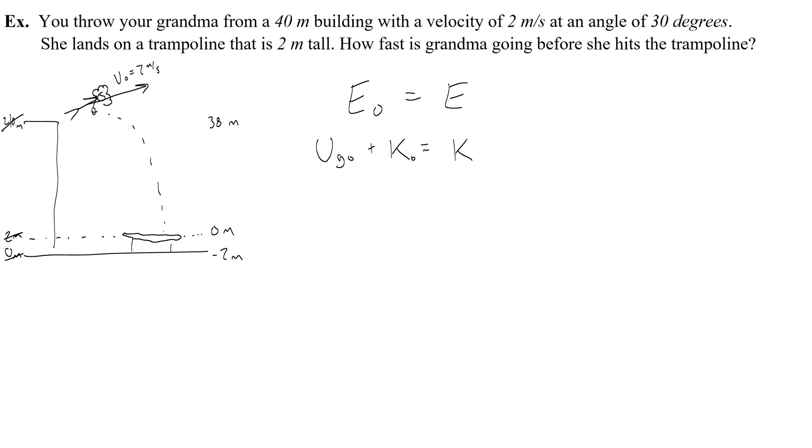Now I'm going to replace these with equations. MGY₀ plus ½MV₀² equals ½MV². As you can see, there's an M in everything, and I want to know how fast grandma's going before she hits the trampoline. So I'll have GY₀ plus ½V₀². I'm going to multiply both sides by 2 to get rid of this one-half. That's going to be V².